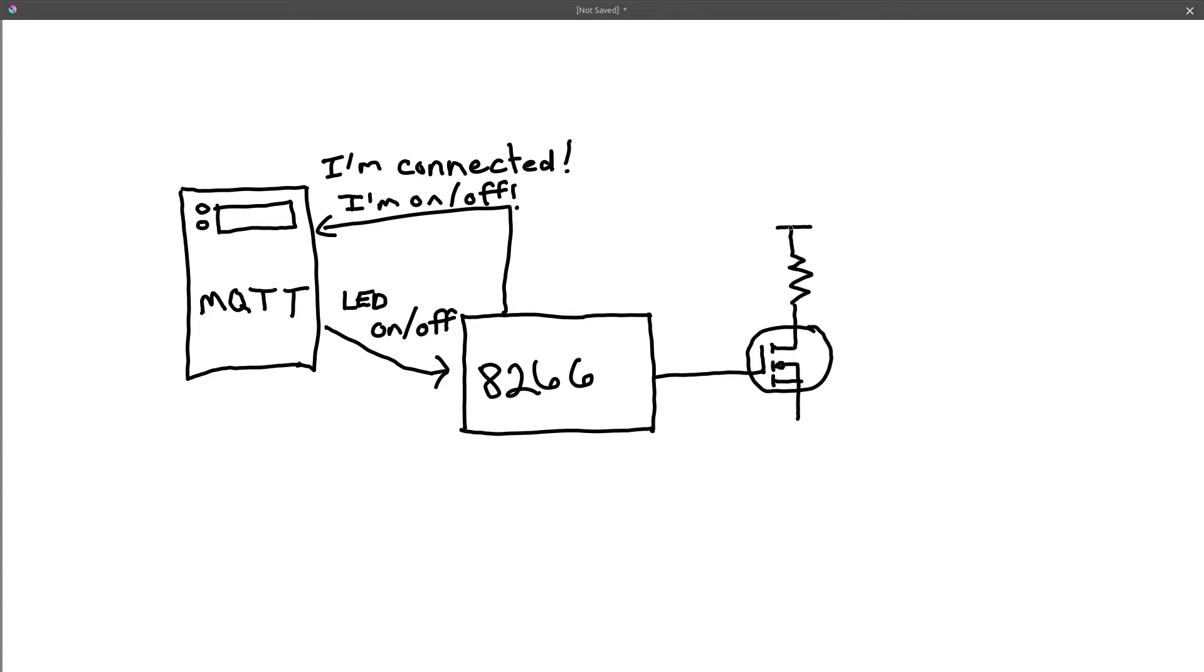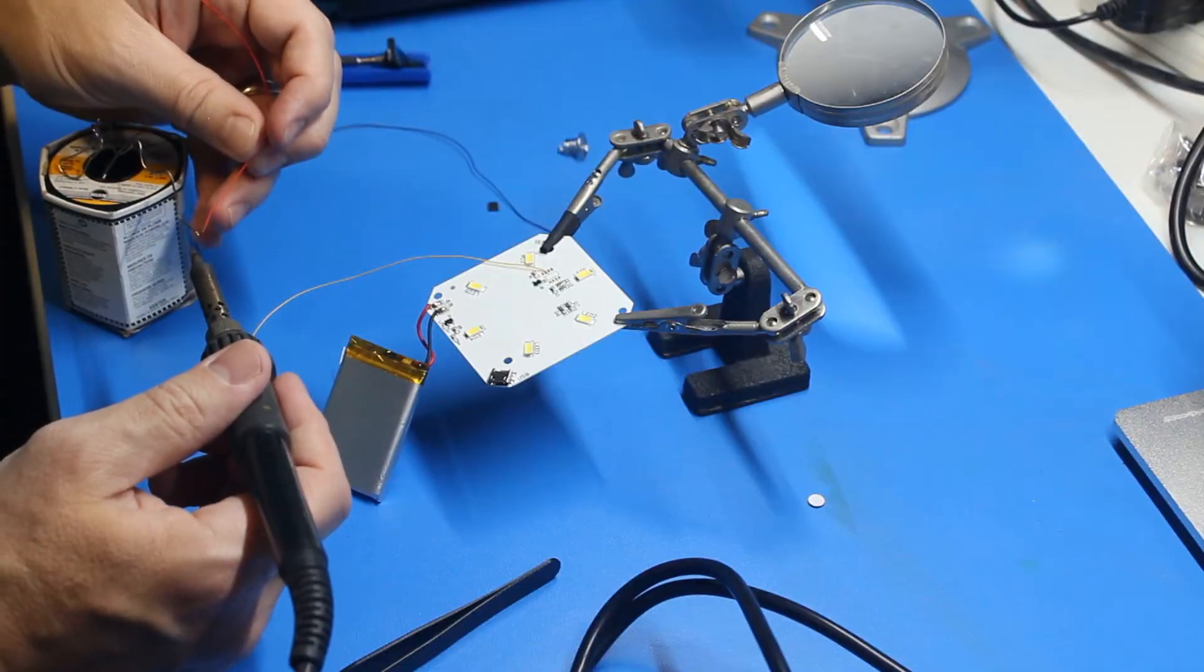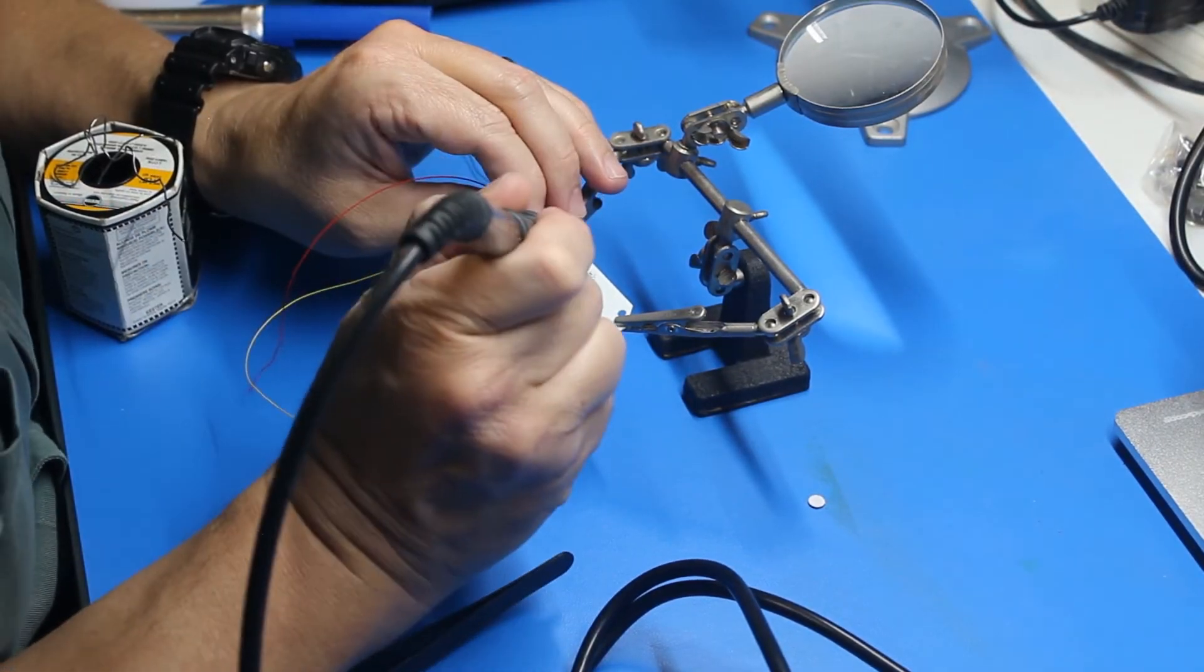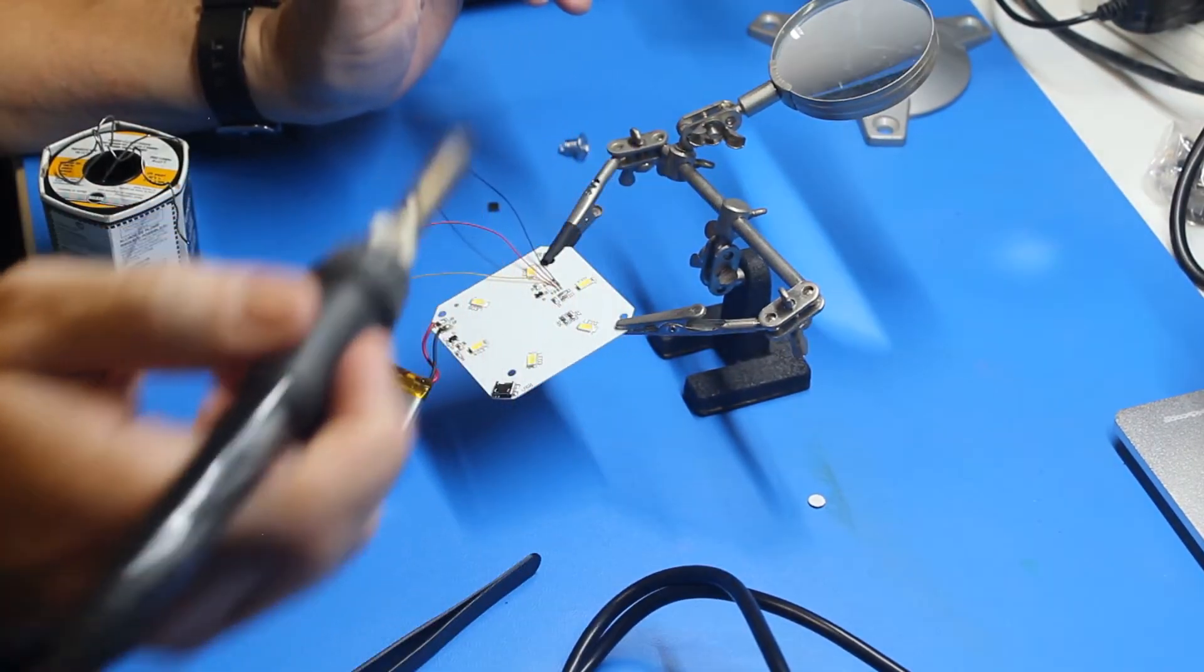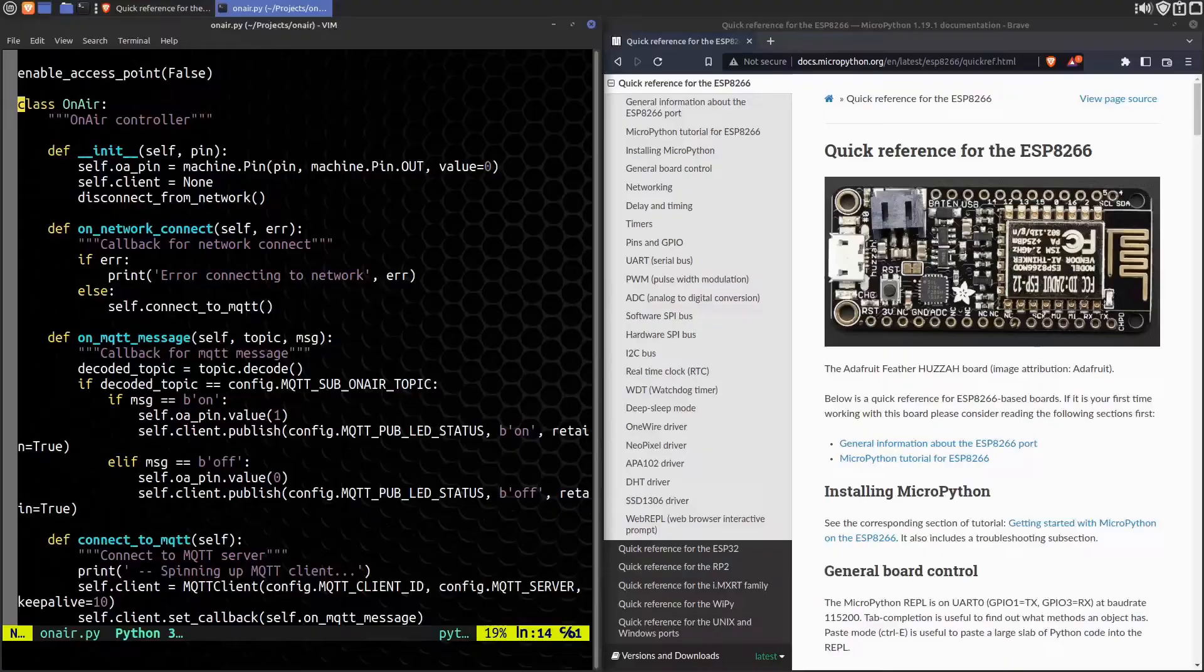After removing the custom controller, I found the voltage-in and the ground lines that went to it and tapped into those with my own wires. I did the same for the output line that drives the LEDs.